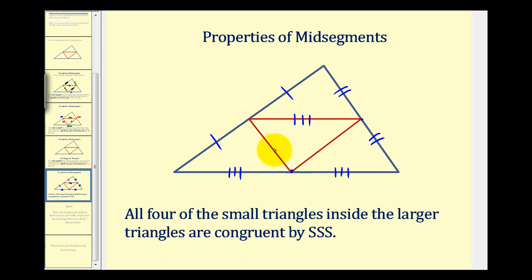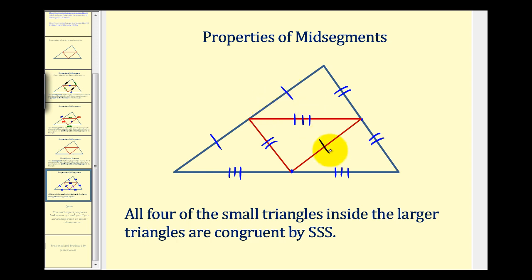And this mid-segment here would be half the length of this side of the triangle, therefore it's congruent to the segment that has two hash marks. And lastly, this mid-segment here is half the length of this side of the triangle, and half that length would be the length of a segment with one hash mark. Now notice that all three sides of these smaller triangles have one, two, and three hash marks.